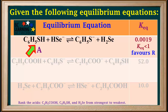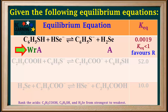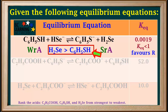Now we identify the acid on each side of the equation. The C6H5SH on the left has one more proton than the C6H5S⁻ on the right, so C6H5SH is the acid on the left. And H2SE on the right has one more proton than the HSE⁻ on the left, so H2SE is the acid on the right. We know that equilibrium favors the side with the weaker acid. Since equilibrium favors reactants in this case, C6H5SH must be the weaker acid, which means H2SE must be the stronger acid of the two. So the first equation tells us that H2SE is stronger than C6H5SH.